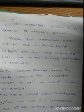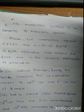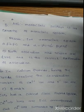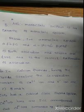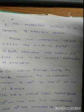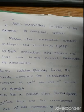Fifth question (assertion-reason): monoclinic sulfur is an example of a monoclinic system. The reason: for a monoclinic system, a ≠ b ≠ c, and alpha = gamma = 90° but beta ≠ 90°. Monoclinic sulfur is indeed an example of the monoclinic system, and both the assertion and reason are true with the reason being the correct explanation. So option A is the answer.